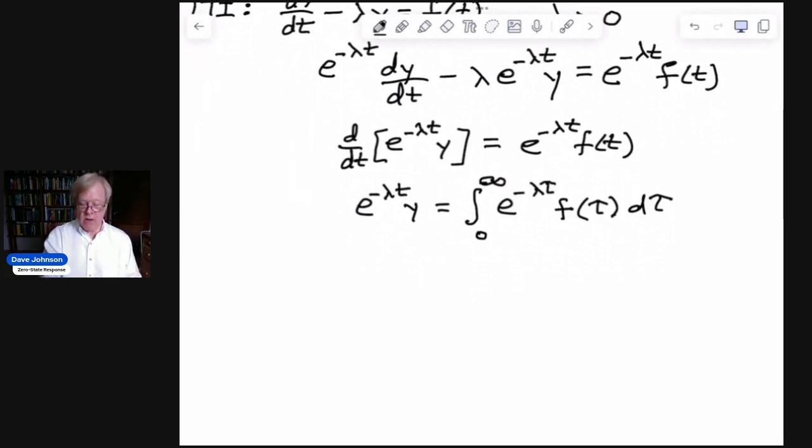This is perfectly legal. τ, in this case, is a dummy variable. But I want to distinguish it from the variable t.